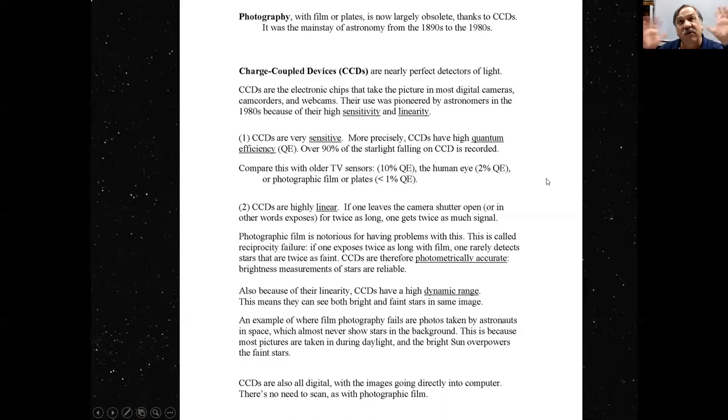Old-fashioned chemical photographic film or plates were notoriously not sensitive. They are also notoriously non-linear. CCDs are highly linear, which means that if you leave the camera shutter open, in other words, you expose for twice as long, you get twice as much signal. Photographic film is notorious for having problems with this. This is called reciprocity failure. If one exposes twice as long with film, one rarely detects stars that are twice as faint. CCDs are therefore photometrically accurate. Brightness measurements of stars are reliable. Because of their linearity, CCDs have high dynamic range. This means that they can see both bright and faint objects in the same image.